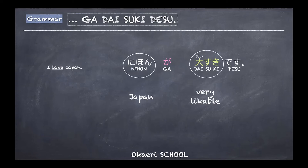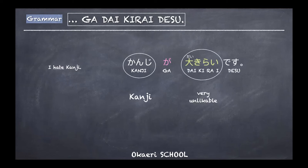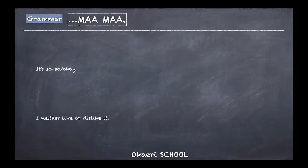The opposite of daisuki is daikirai — to hate something strongly. It's the same concept: dai meaning big, plus kirai meaning dislike. For example: natto ga daikirai desu — I hate natto. Or kanji ga daikirai desu. This is very strong to say, so use it carefully.